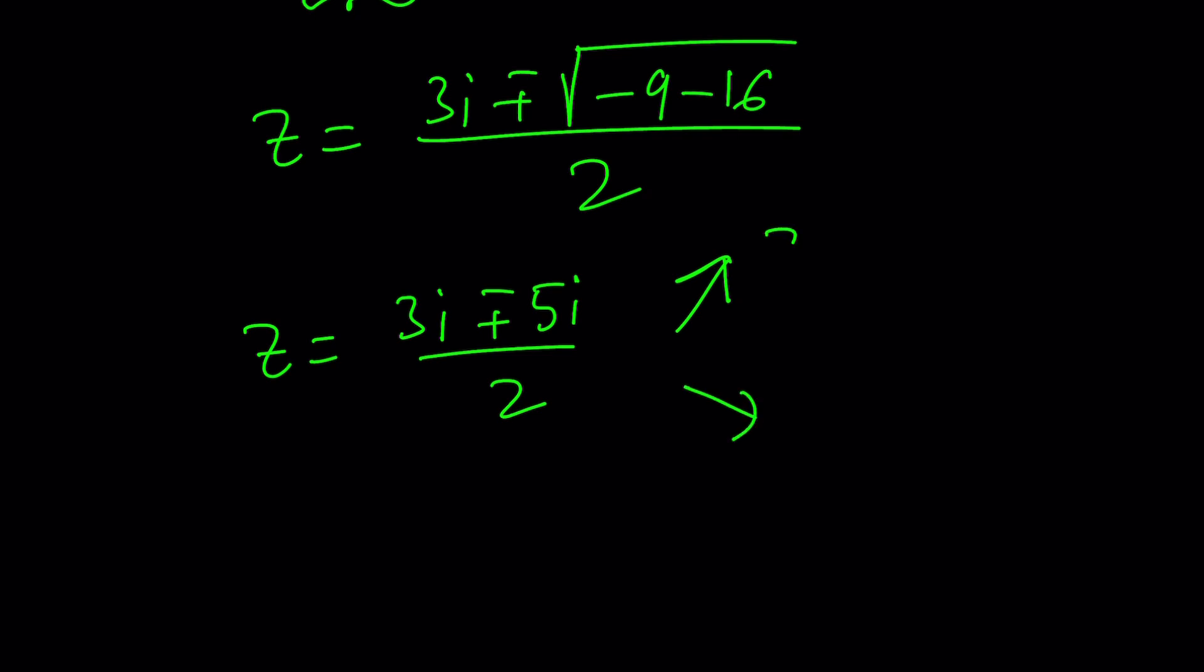A quadratic equation has two complex roots. Is that called the fundamental theorem of algebra? Something like that? Anyways, if you add them up and divide by 2, you get 4i. And if you subtract and divide by 2, you get negative i. Awesome. So we have two solutions. Case closed. We can go home, right? No.